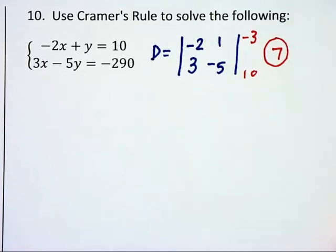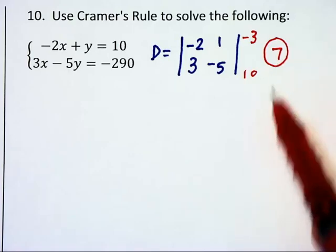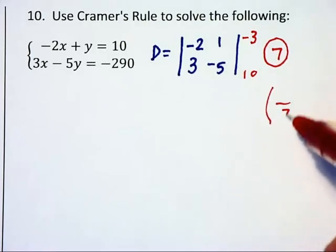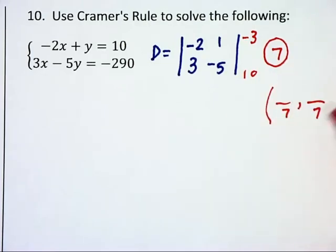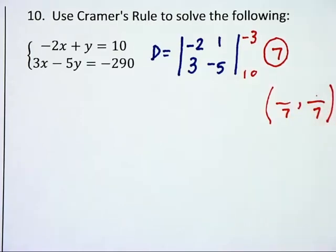I always do that first because I want to make sure that it's not 0, because if I were dividing by 0 when I create Cramer's rule, we'd have some problems. But as we know, this will be something over 7, something over 7,